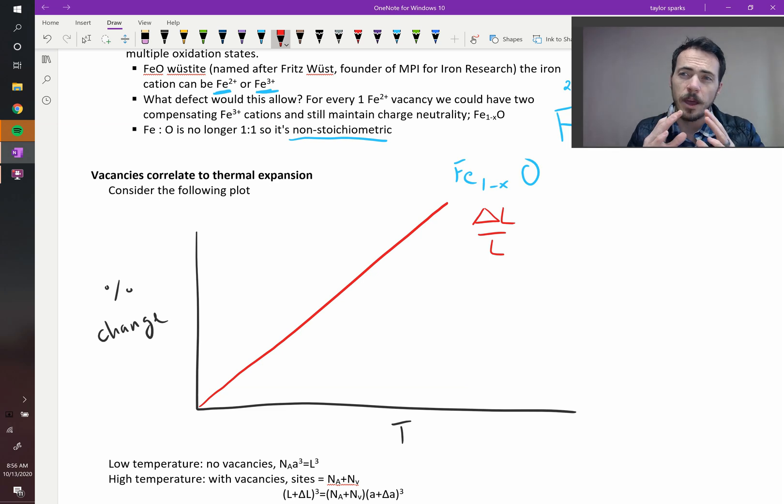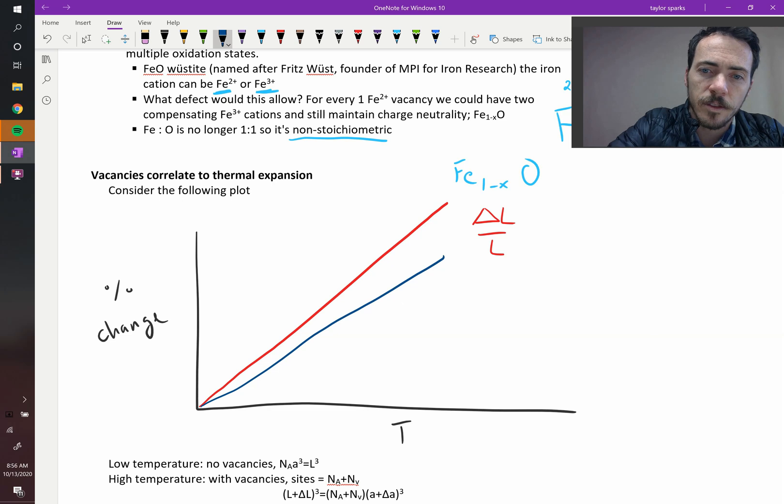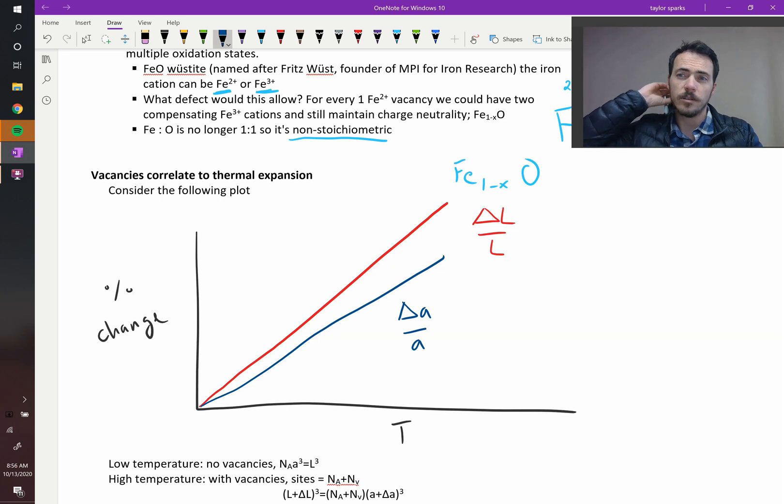Now, how much of that expansion comes from the lattice parameter? Or in other words, if we plotted the lattice parameter change, it would look something like this. This is delta A over A. So the overall component is going to increase, let's assume, that it's a material that expands under heating. Then part of that expansion is from the lattice parameter, literally getting bigger, that the unit cell increases when you heat it up. But not all of it.